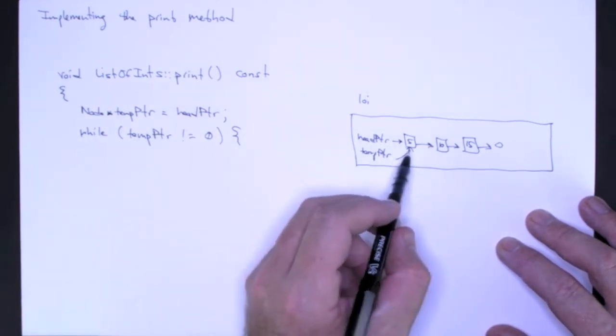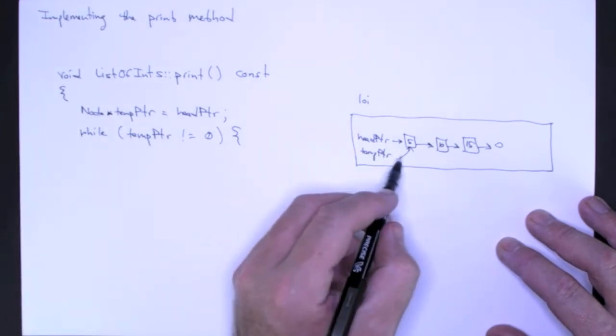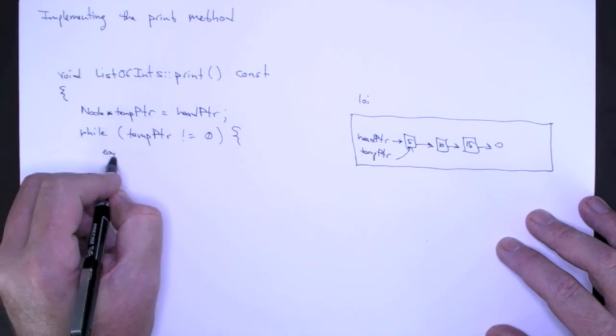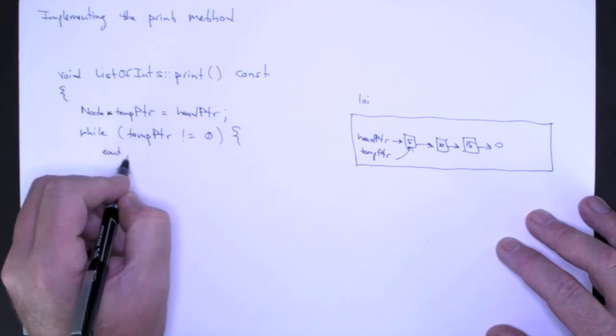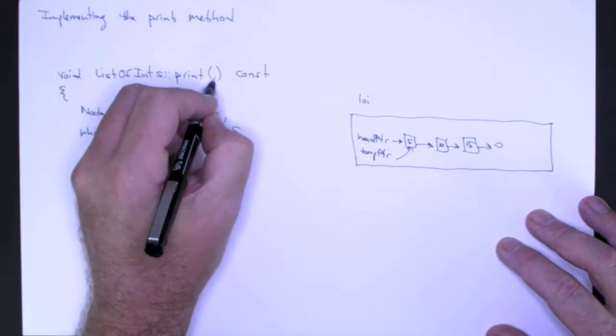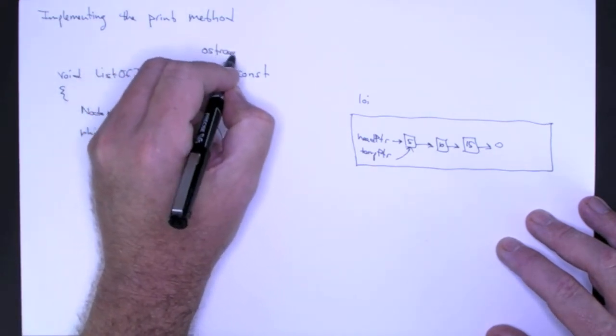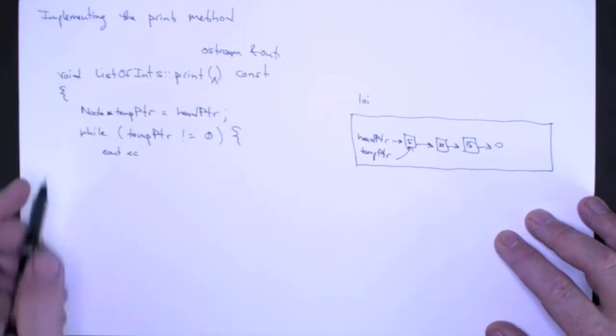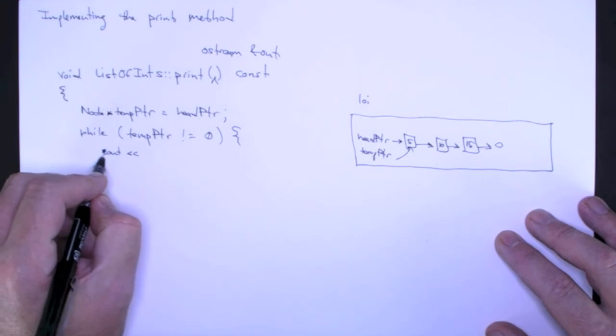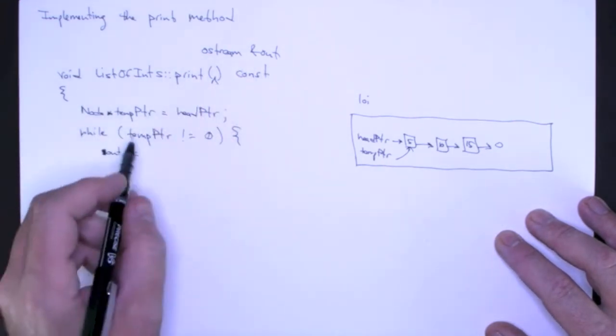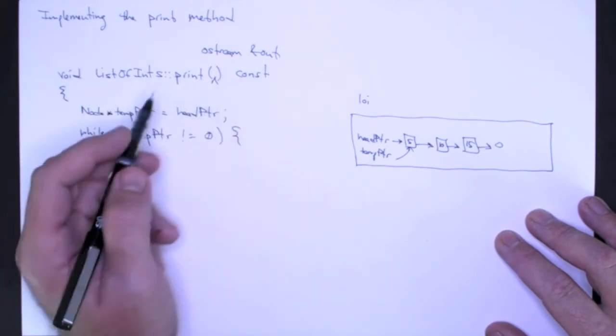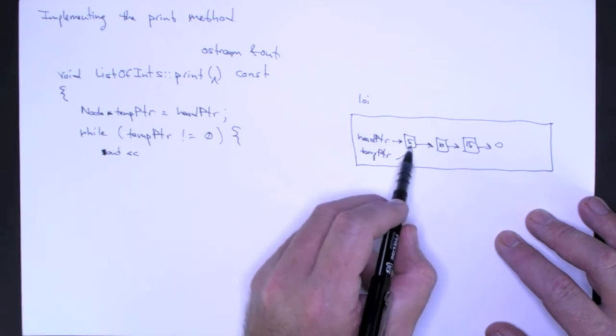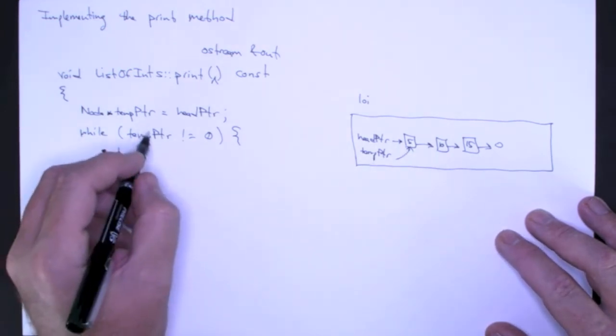Well we're pointing at a node. We know that we're pointing at a node, otherwise we wouldn't have entered the while loop. So the first thing I need to do is I need to print that. Oh, you know what I forgot to do? I forgot that I am using the ostream out. So I've got my ostream out. I'm not going to go to cout. I'm going to go to the parameter that comes in. It defaults to cout.